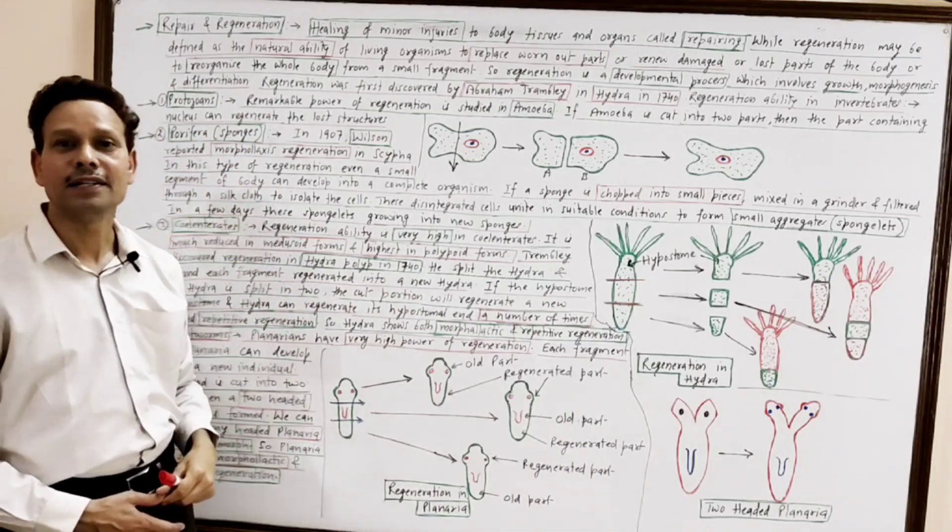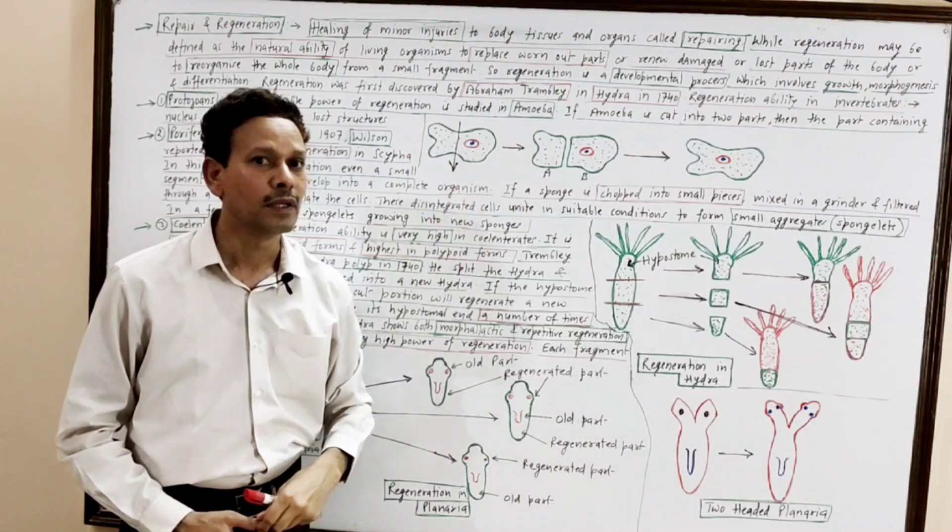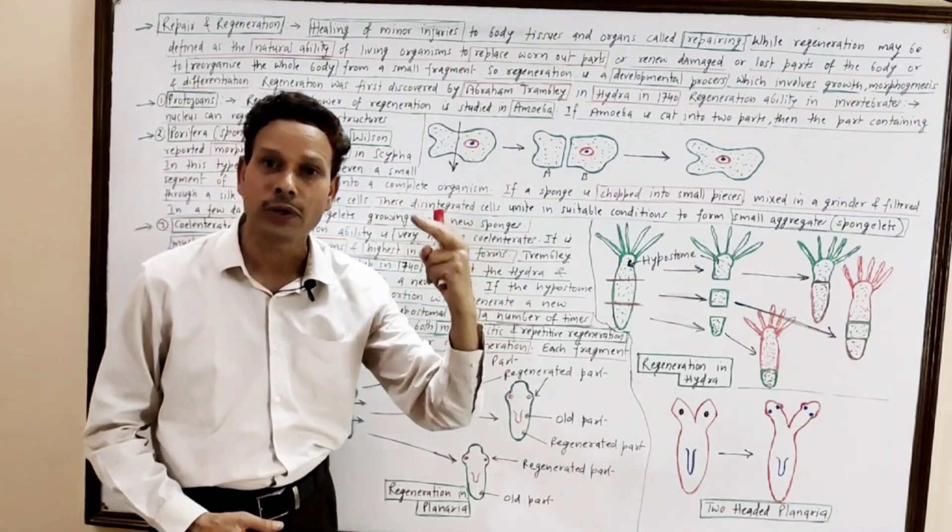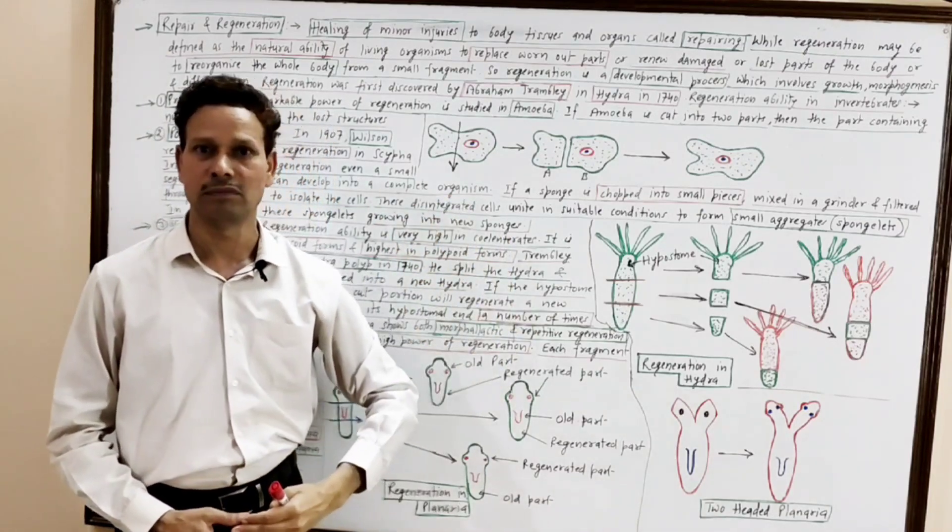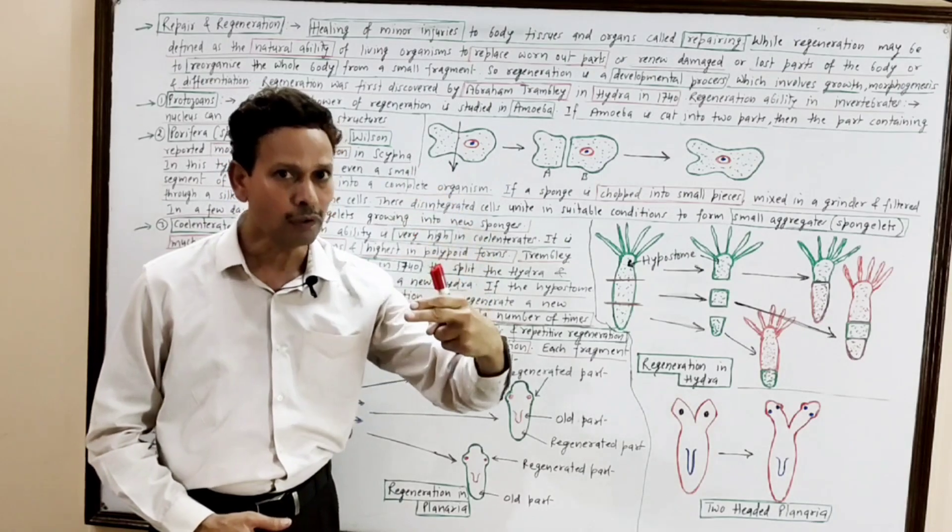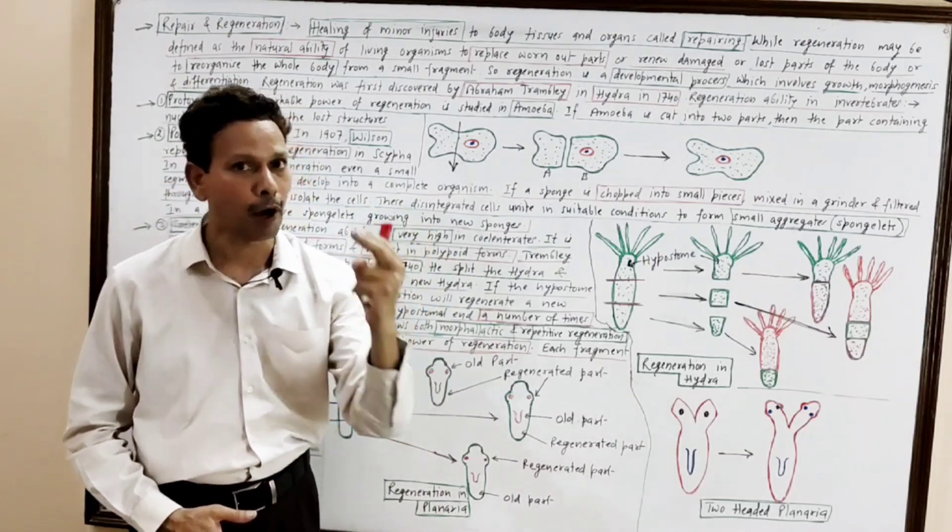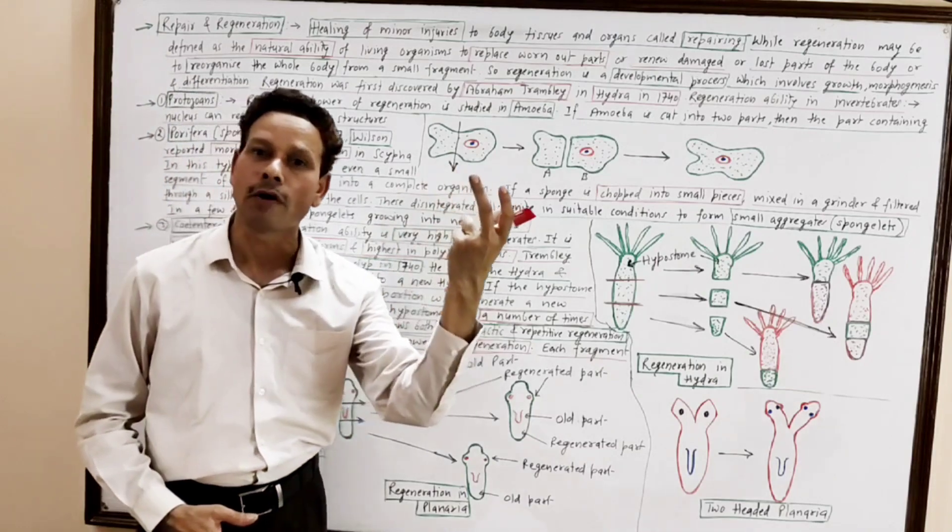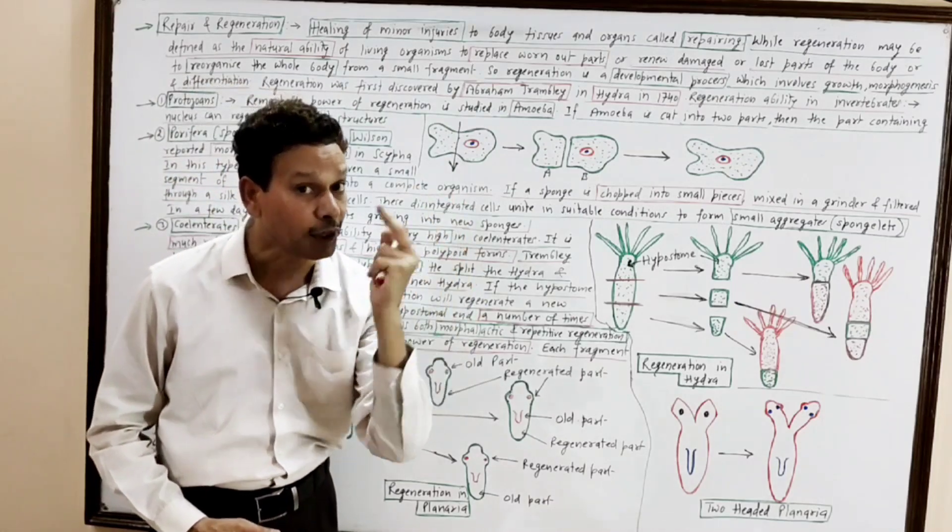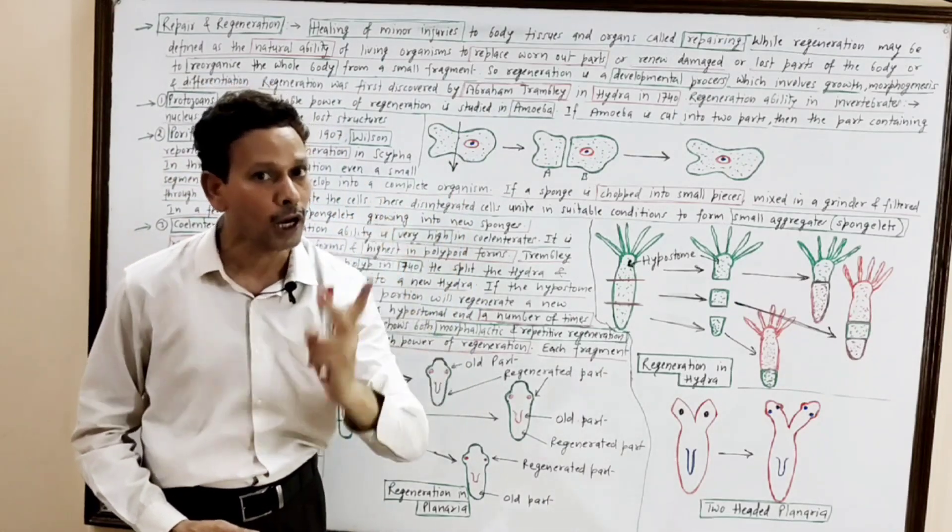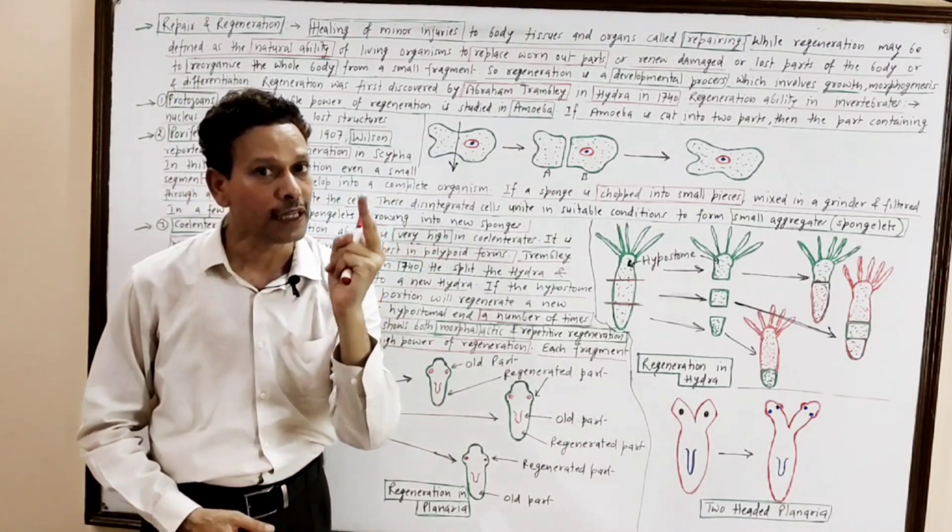In cnidarians like hydra, very high power of regeneration in case of cnidarians. As we know, cnidarians show polymorphism. Polymorphism means occurrence of more than one form. Generally, they show two forms. One is polyp, second is medusa. It is observed that in polyp, polypoid state, very high power of regeneration. And in case of medusa, medusoid form, the regeneration power is greatly reduced. For competitive exam students, in case of polyp of cnidarians, maximum power of regeneration. But in case of medusa, it is greatly reduced.